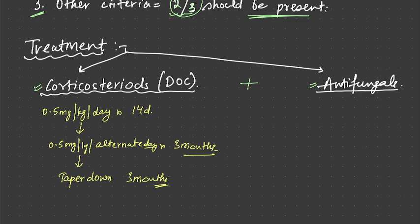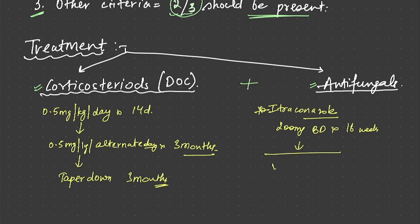Antifungals: we use itraconazole. What is the dose? 200 mg BD for 16 weeks. This is the dose of itraconazole.